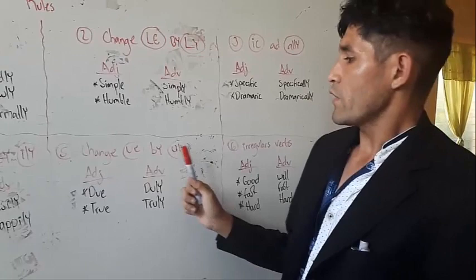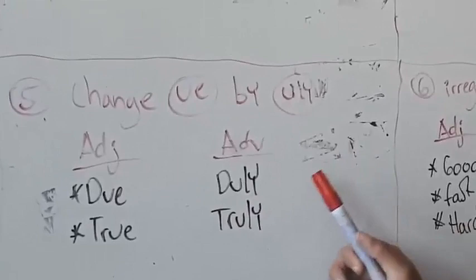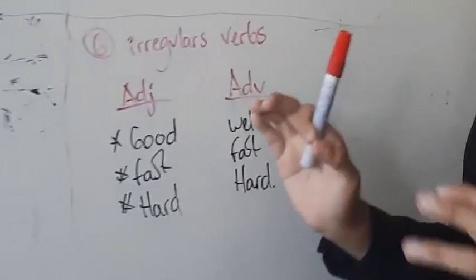The fifth rule that we have: we need to change -ue to -uly. The adjective 'due' changes to 'duly.' 'True' becomes 'truly.'